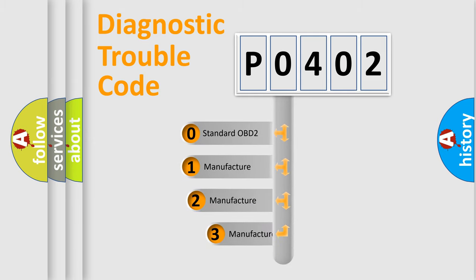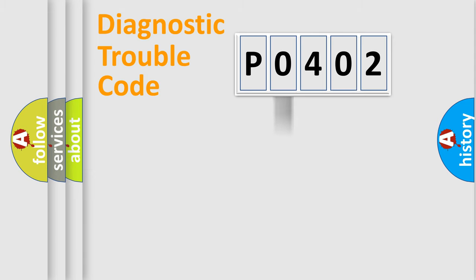If the second character is expressed as zero, it is a standardized error. In the case of numbers 1, 2, or 3, it is a more specific expression of the car-specific error.